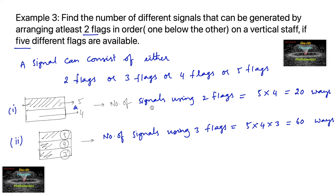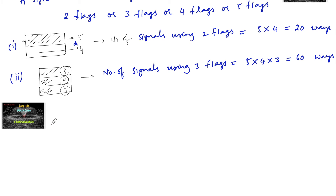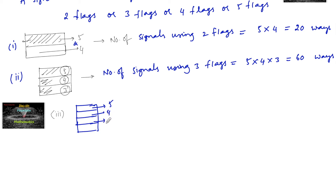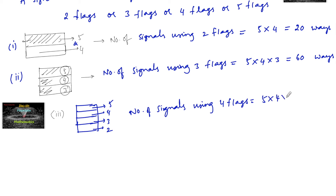Similarly, if we use 4 flags for a signal: the first flag can be chosen 5 ways, the second flag 4 ways, the third flag 3 ways, and the fourth flag 2 ways. So the number of signals using 4 flags is 5 × 4 × 3 × 2 = 120 ways. So 120 signals can be prepared using 4 different flags.